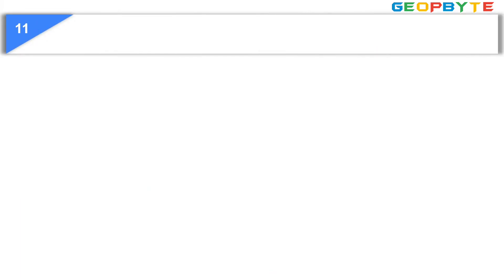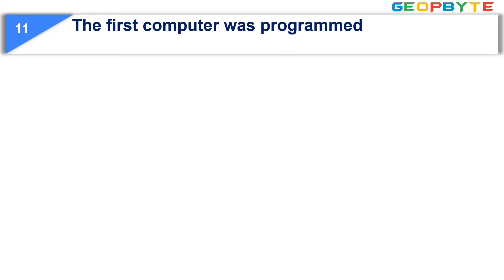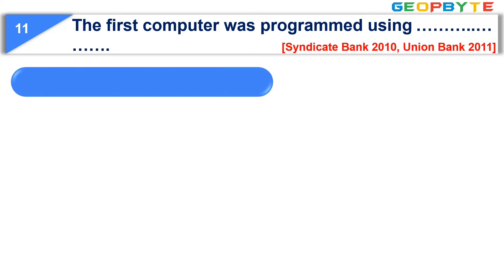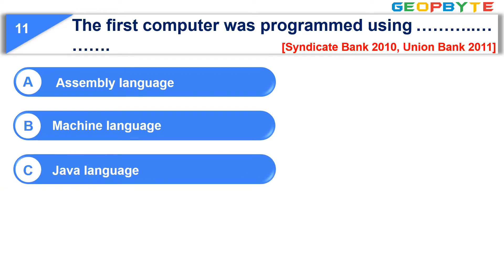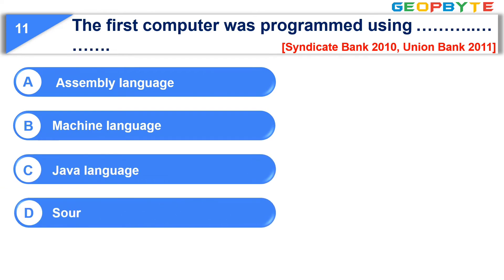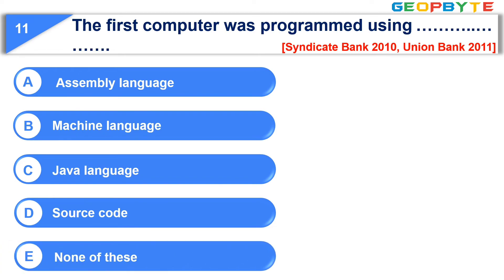Moving to question number eleven. The first computer was programmed using. Option A: Assembly language. Option B: Machine language. Option C: Java language. Option D: Source code. Option E: None of these. The correct answer is option B, Machine language.